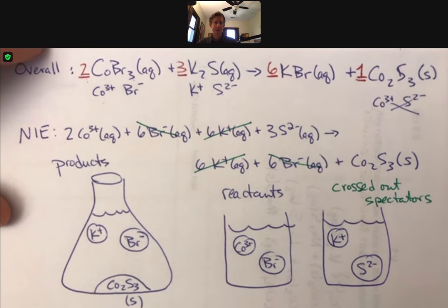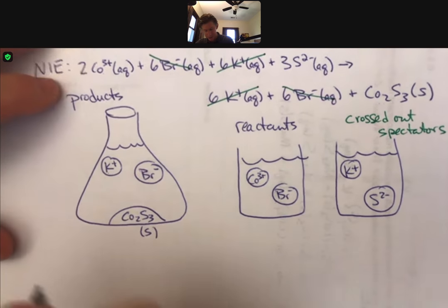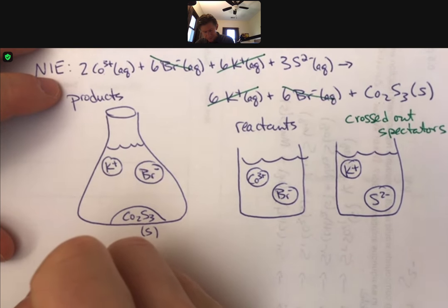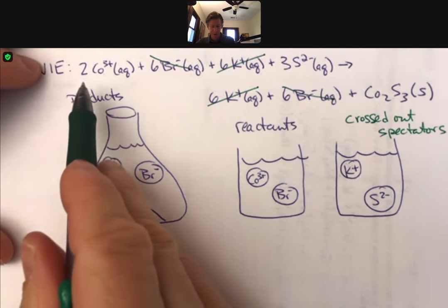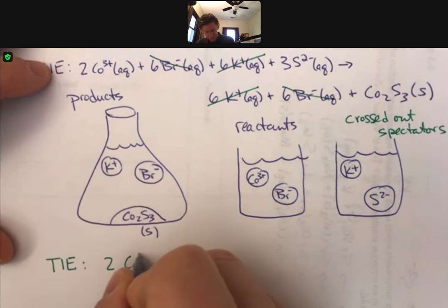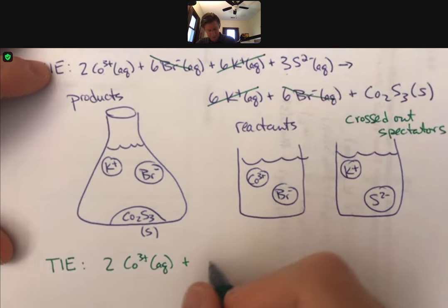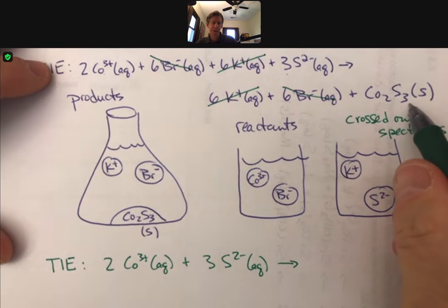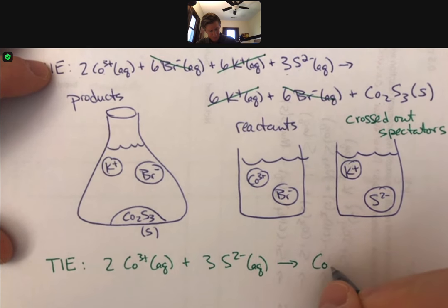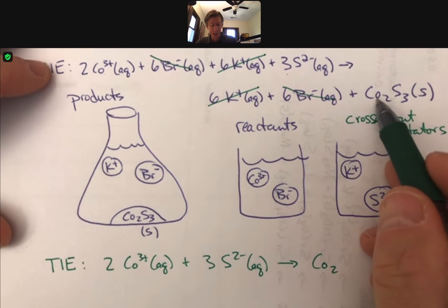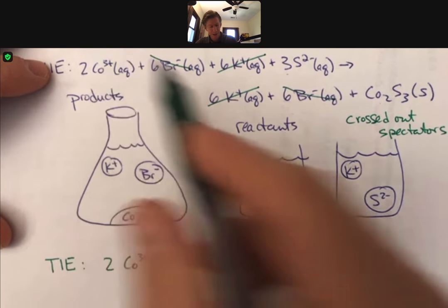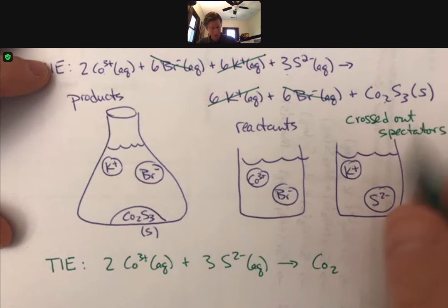And now I'm going to write my TIE, which is everything left. And the total ionic equation has two cobalt three ions plus three sulfide ions goes to cobalt two sulfide three solid. And I know, so I'm totally with you if every time I say cobalt three, because cobalt three is the charge, but I write two. Anyway, how about Co2S3 for now?